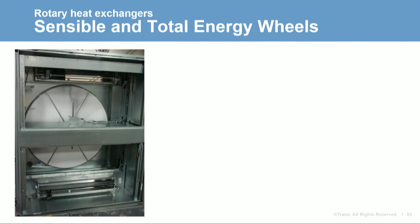As the wheel rotates between airstreams, sensible heat is transferred to the material from the hot airstream and released in the cold airstream. Similarly, latent heat is transferred as the desiccant adsorbs water vapor from the airstream with higher humidity and desorbs in the airstream with lower humidity. This means colder air is heated and drier air is humidified. Capacity control is done with bypass dampers or modulating wheel speed. The wheels experience cross leakage — seal leakage, matrix leakage, and carryover.